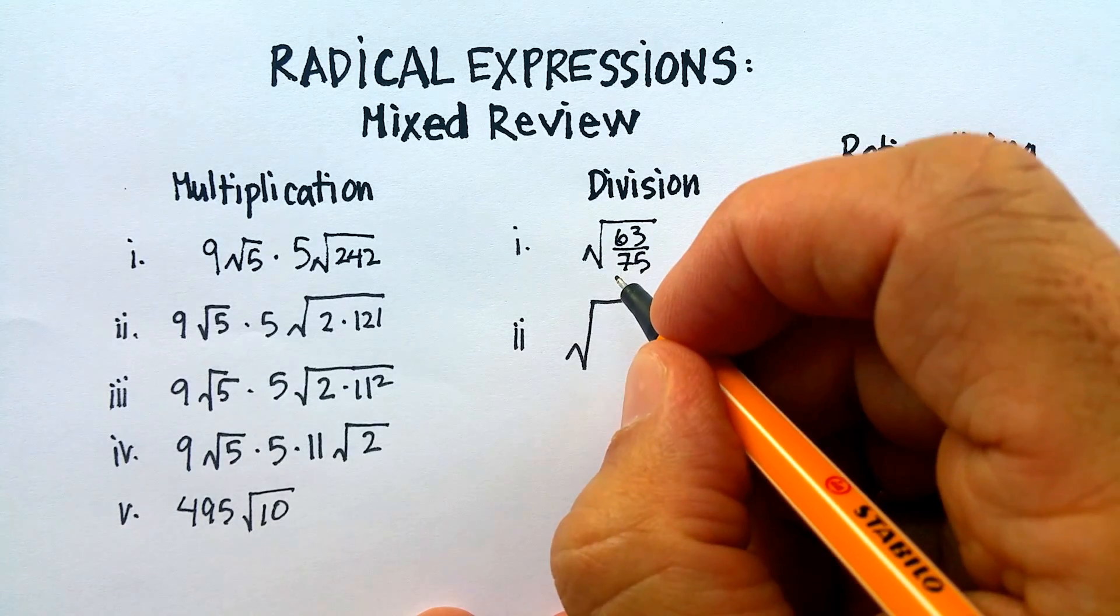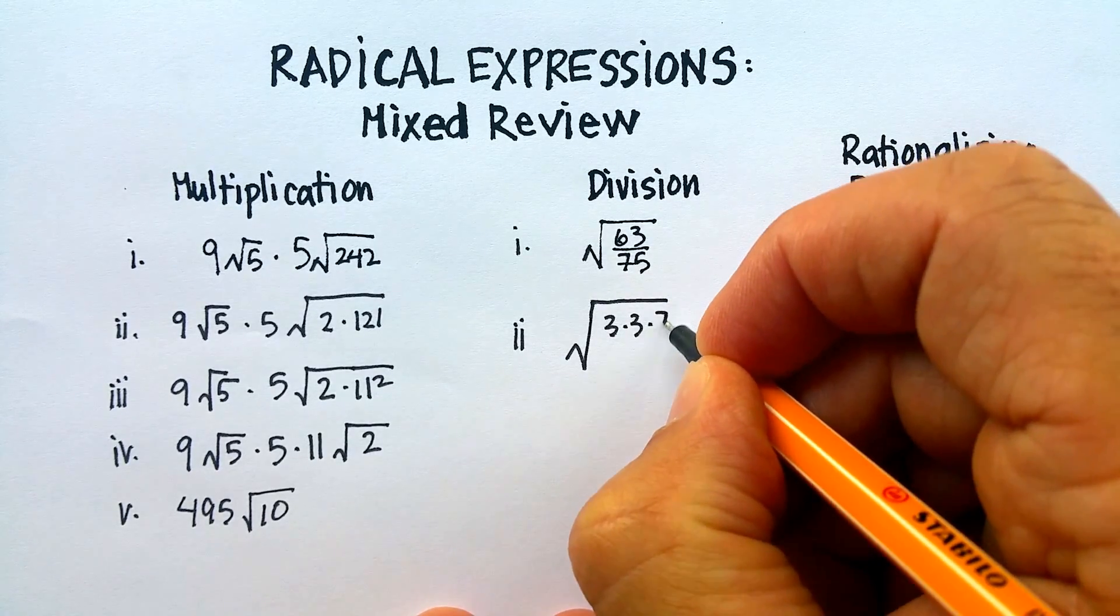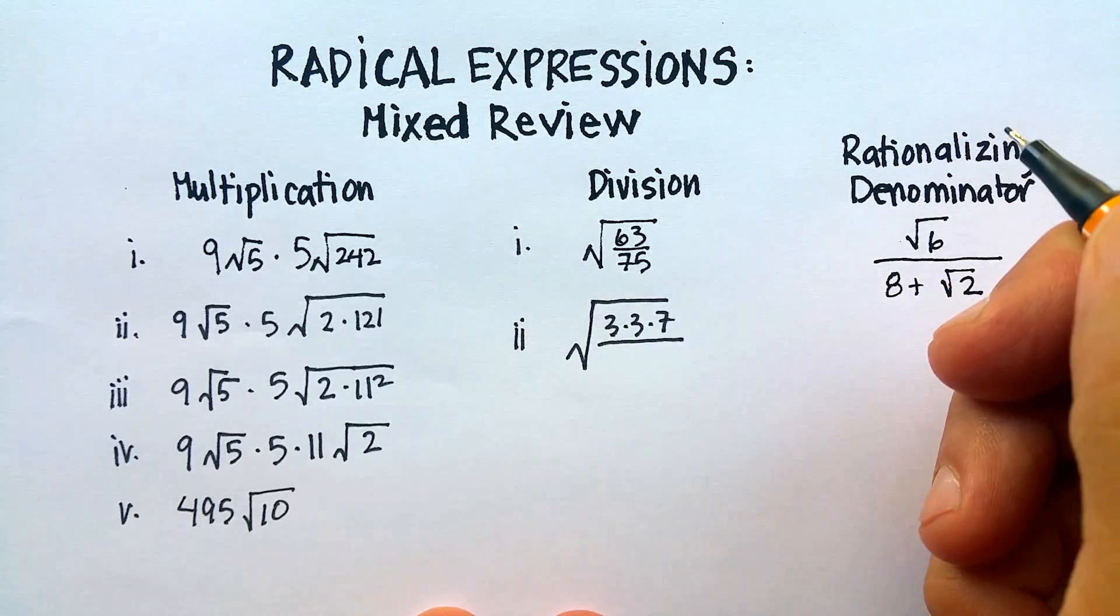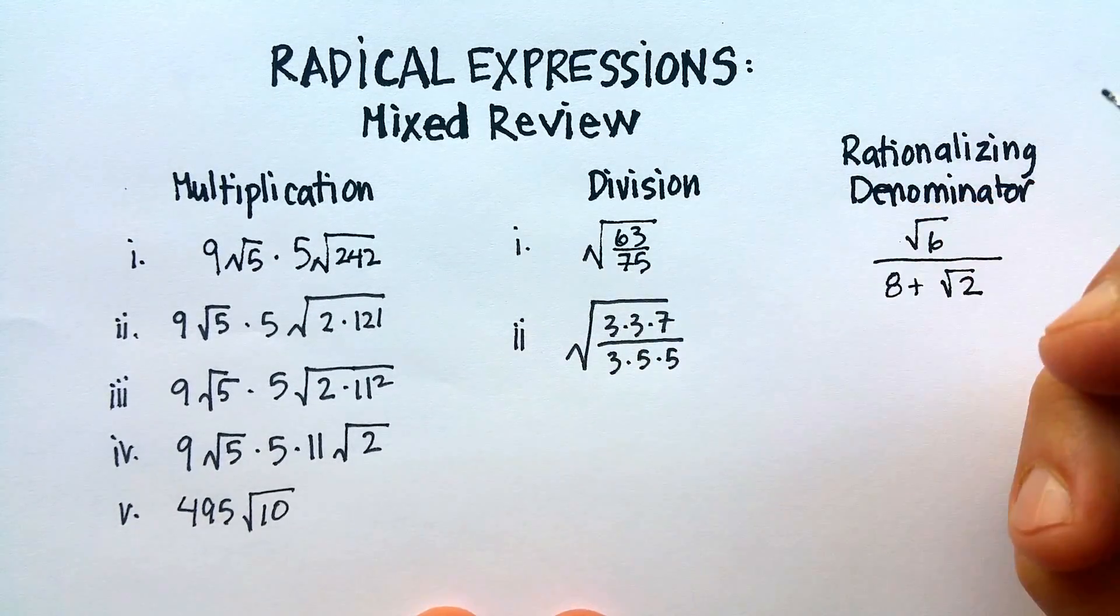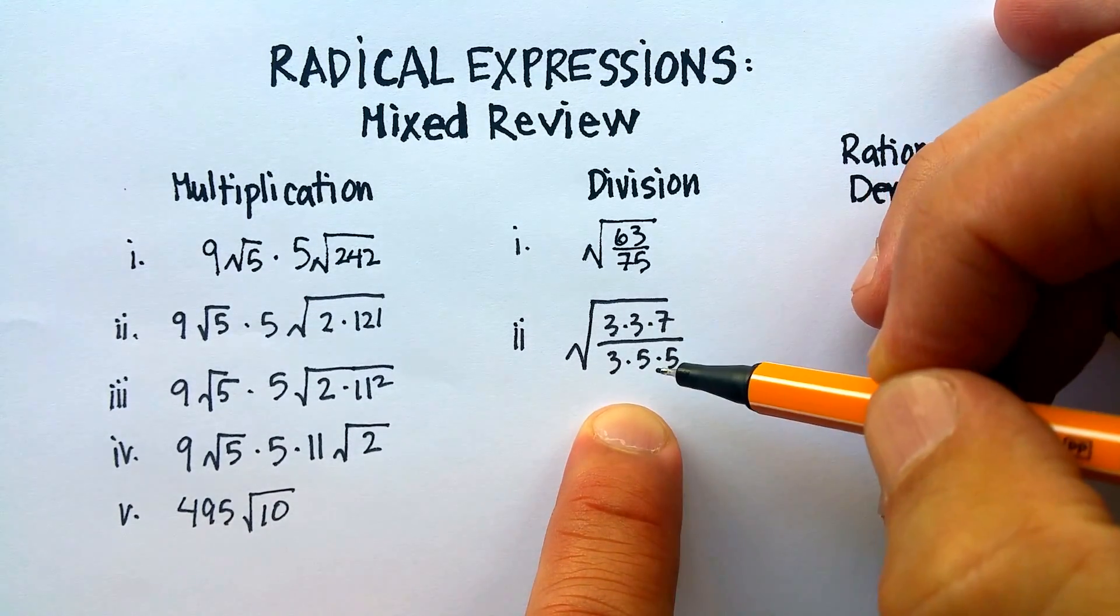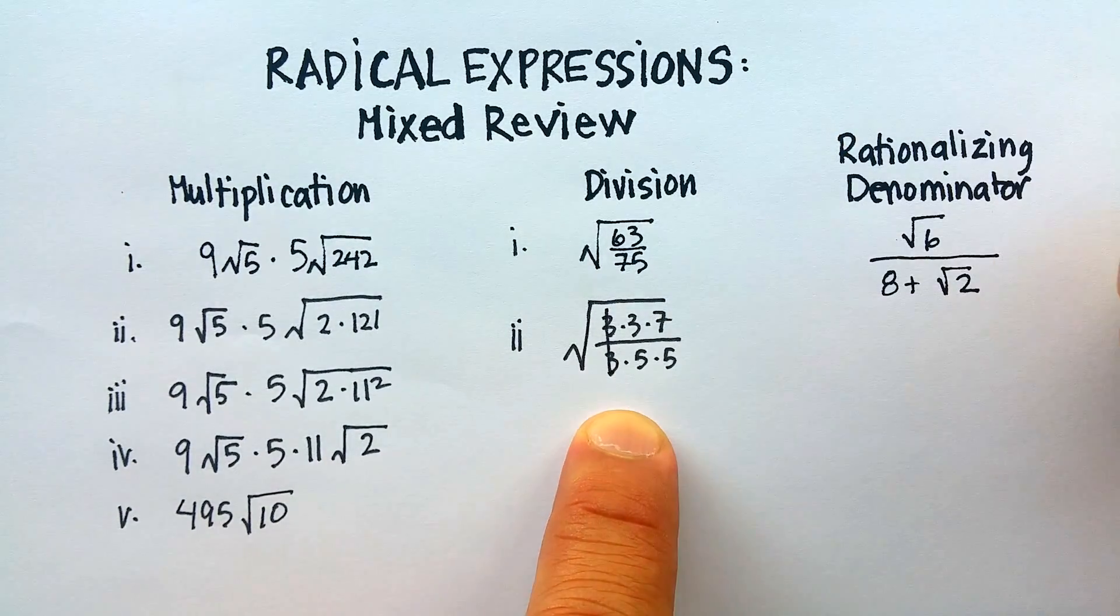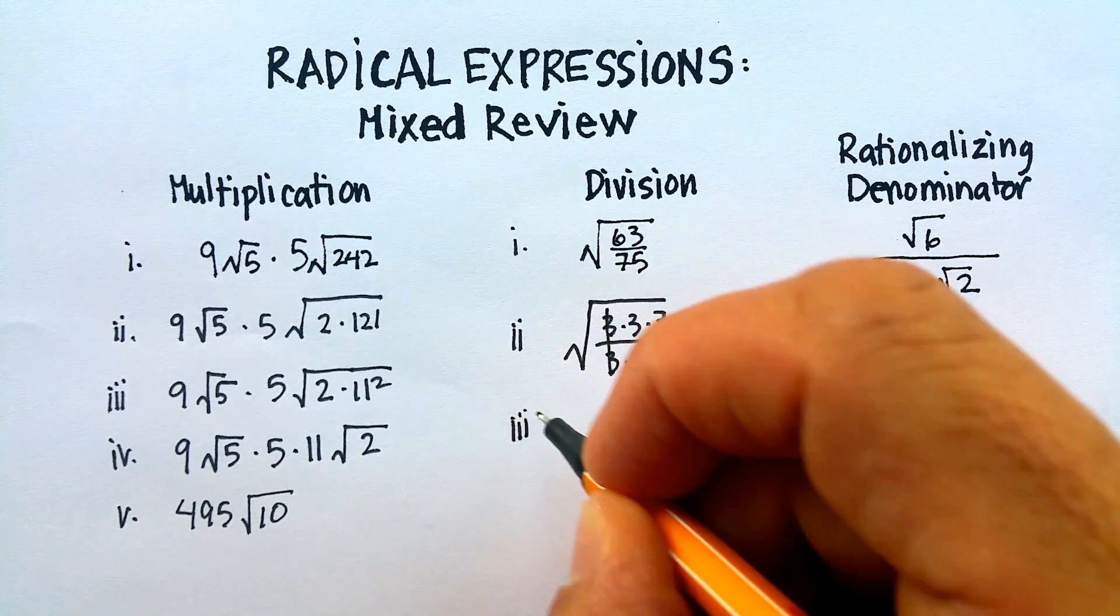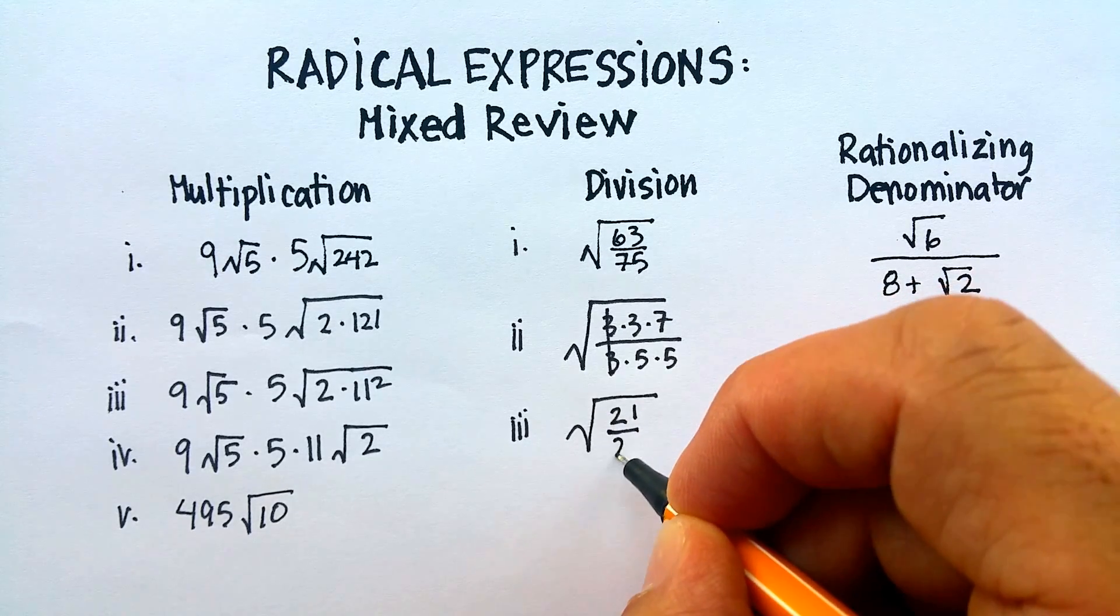So let's see what we got here. I know that 63 is 9 times 7, or 3 times 3 times 7. I know that 75 is 3 times 25, or 3 times 5 times 5. Now, the reason I wrote it out this way is because I can now simplify this particular fraction by factoring out the 3's. So the 3 over 3 goes out, and I've got the square root of 21 over 25.